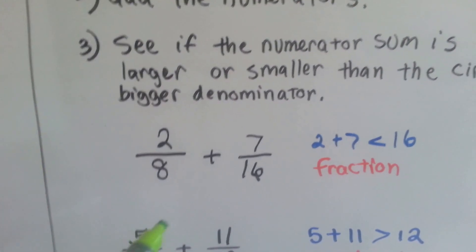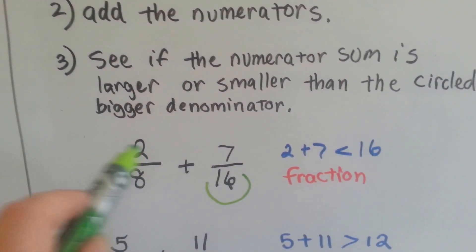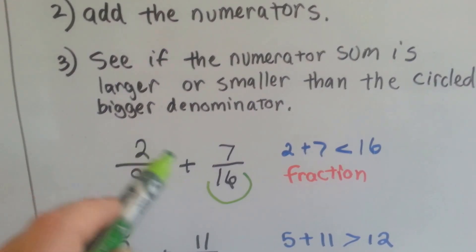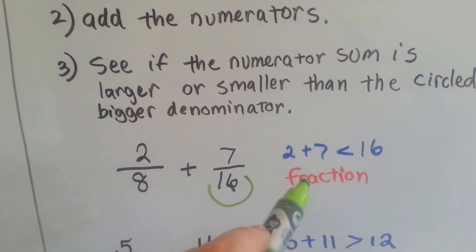Find the bigger denominator. That would be the 16. We add the numerators. 2 plus 7 is 9. 9 is smaller than 16, so the answer will be a fraction.